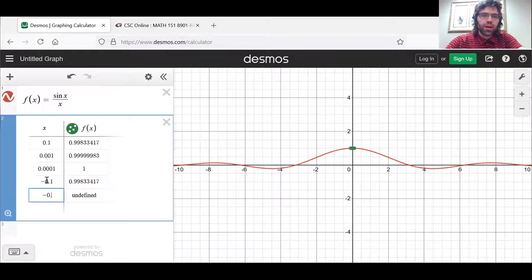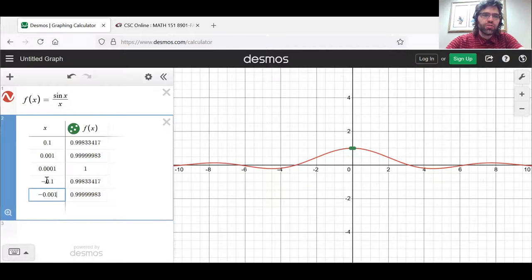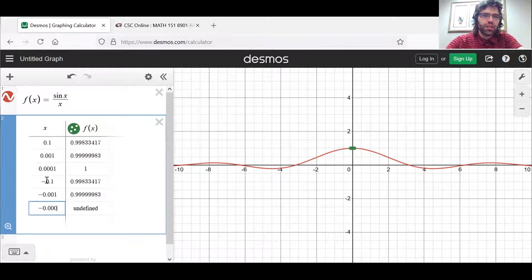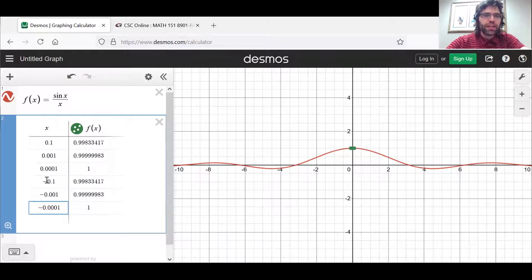Likewise, if we approach zero from the negative direction. Again, this isn't actually one, but it's so close to one that Desmos is rounding it to one.